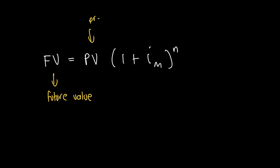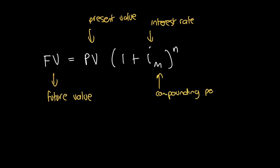PV is the present value. i is the interest rate — technically the effective interest rate — and it will be in decimal fraction notation. m is the compounding period, so if it's monthly it would be 12, if it's yearly it would be 365, and so on. n is the duration, and the units of n and m need to coincide, so if m is 12 (monthly), then n needs to be in months.